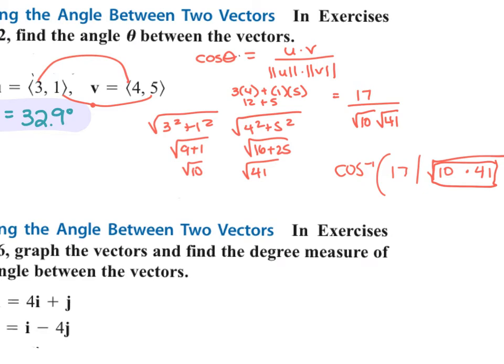And remember, you can kind of check it — I could plot 3, 1 and 4, 5, which are definitely in an acute angle, which is consistent with my 32.9.